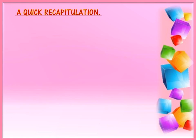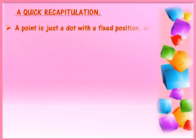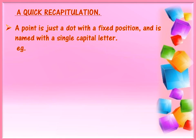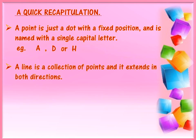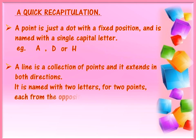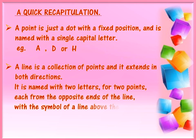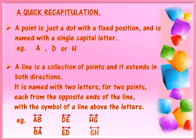Before we end, let's do a quick recapitulation of everything we learnt in this video. A point is just a dot with a fixed position and is named with a single capital letter — for example, point A, point D or point H. A line is a collection of points and it extends in both directions. It is named with two letters for two points each from the opposite ends of the line with the symbol of a line above the letters — for example, line AB or BA, line DE or ED, line HG or GH.